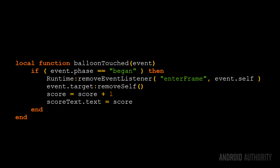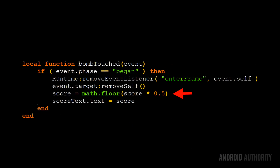To recap: balloon_touched checks to see if we're at the beginning of a touch sequence, then removes the enter frame listener, deletes the balloon itself, increments the score, and displays the new score. Now we need something similar for bombs. The code is very similar, with the exception that rather than incrementing the score, the score is multiplied by 0.5 — i.e. divided by 2. The math.floor function rounds down the score to the nearest integer. So if the player had a score of 3 and tapped a bomb, the new score would be 1 and not 1.5.